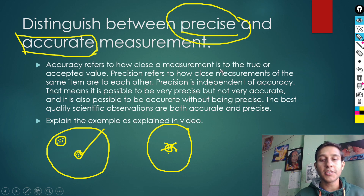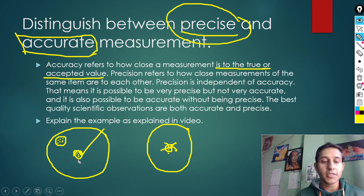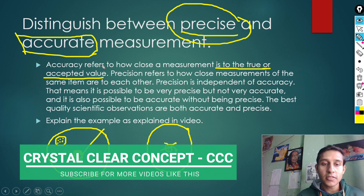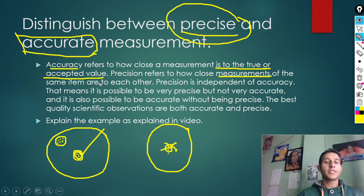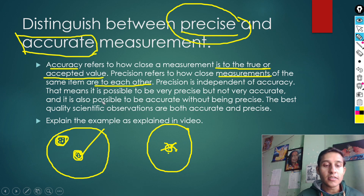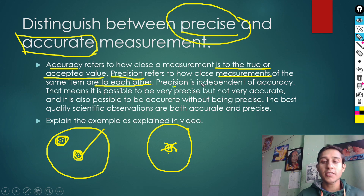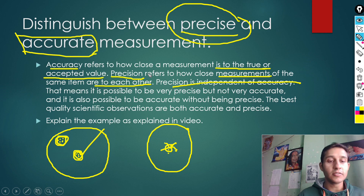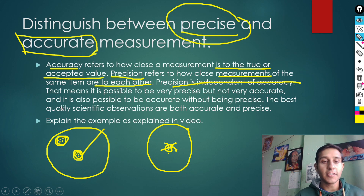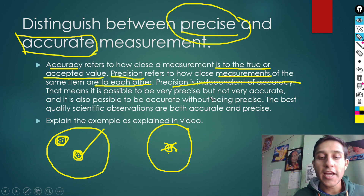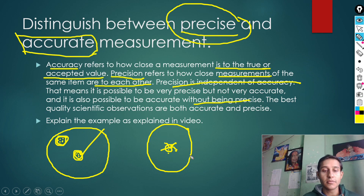Accuracy refers to how close a measurement is to a true or accepted value - true value means the central value. Precision refers to how close the measurements of the same item are to each other. Precision is independent of accuracy - these two are independent. It is possible to be very precise but not very accurate, and it is also possible to be accurate without being precise.